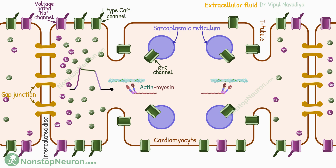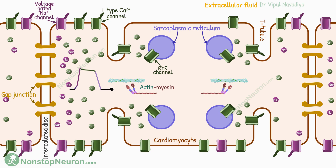Now let's see how this excitation leads to contraction — in other words, how excitation-contraction coupling happens. The newly generated action potential travels along the membrane, and as it does so, it also penetrates deeper into the cell by T-tubules. So calcium channels in T-tubules also open, and through them, extracellular calcium enters the cell. This calcium causes the opening of calcium-release channels on the sarcoplasmic reticulum as well, so calcium from the sarcoplasmic reticulum also enters the cytoplasm.